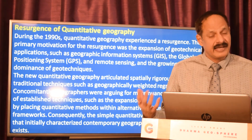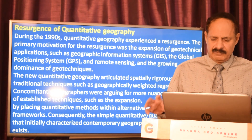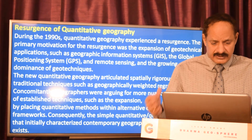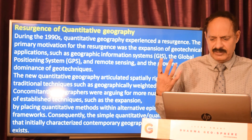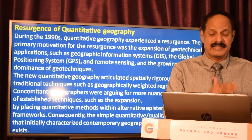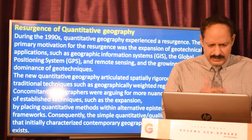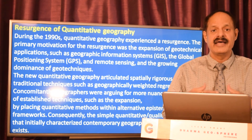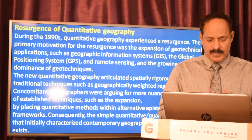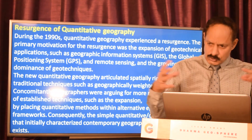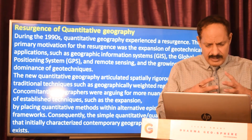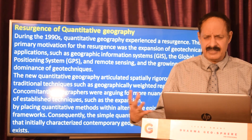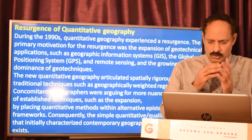The new quantitative geography was much more articulative because it brought in spatially rigorous versions of traditional techniques such as geographically weighted regressions. Concomitantly, geographers were arguing for more nuanced application of established techniques, such as expansion, by placing quantitative methods within alternative epistemological frameworks. It is always good to make a balance of quantitative methods with other traditional methods and see what best works in a particular situation.